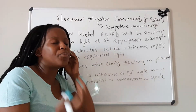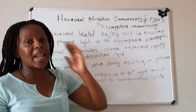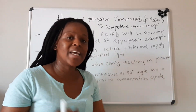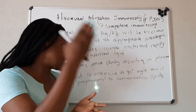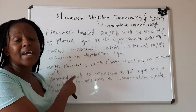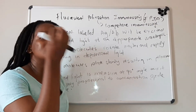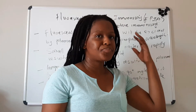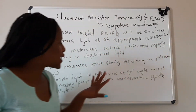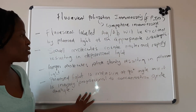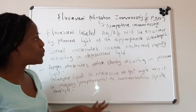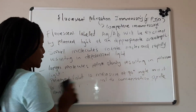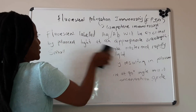Depolarized light is the light that will be emitted in a different plane from the excitation light. Whereas polarized light is the light emitted in the same plane as the excitation light. That is basically what fluorescent polarization is. To explain further, let's do it in diagram form so that you can see what really happens.